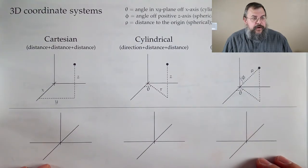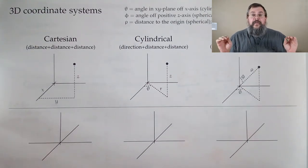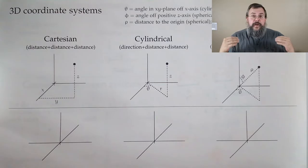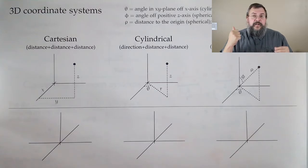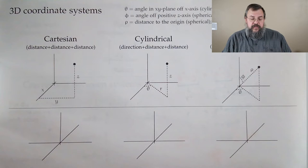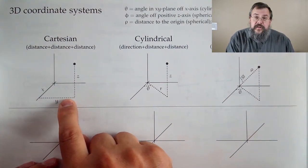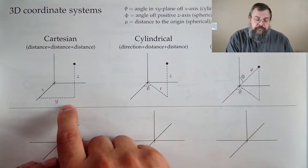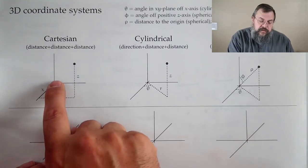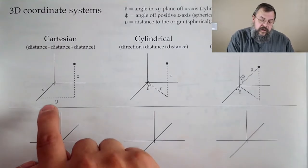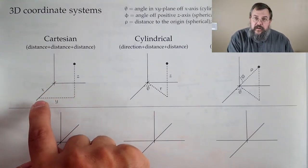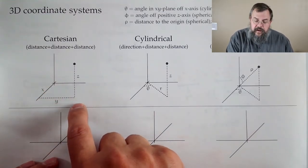We're going to talk about all three 3D systems simultaneously. In two dimensions, we had Cartesian (distance, distance) and polar (distance, direction). Now in three dimensions, we have three variations. Cartesian is distance, distance, distance — you have an x direction, a y direction, and a z direction. How far do you go in x, in y, in z — those are the three distances.